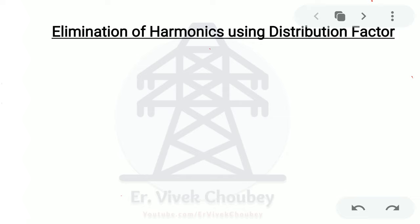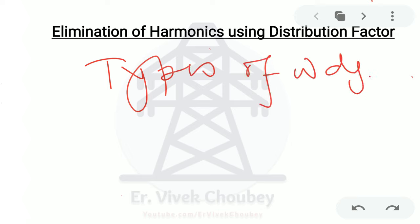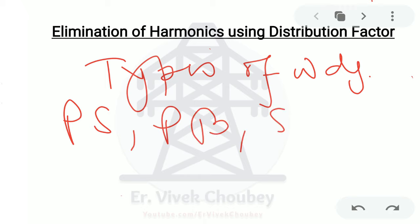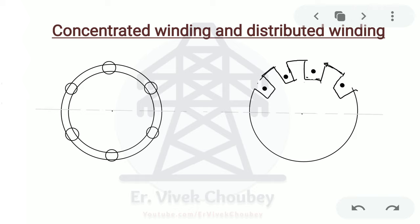The allied concepts of distribution factor include types of winding. We will see what are the types of windings, what it means when we say distributed, what it means when we say concentrated. Then we will cover phase spread, phase belt, and slot pitch — all of these concepts are related to distribution — and then we will finally go to distribution factor.